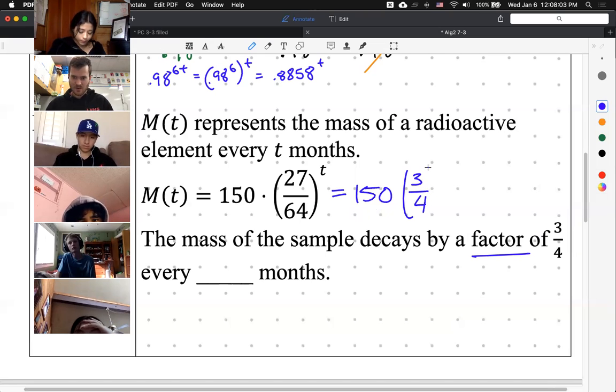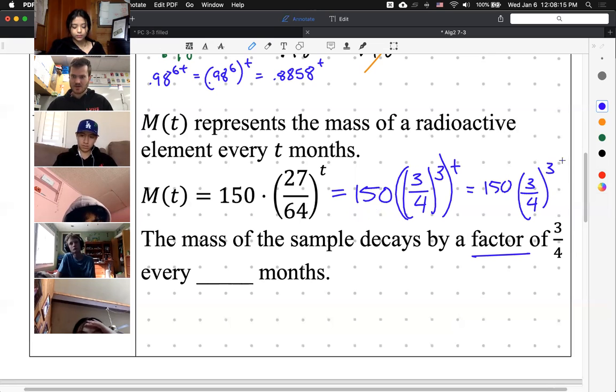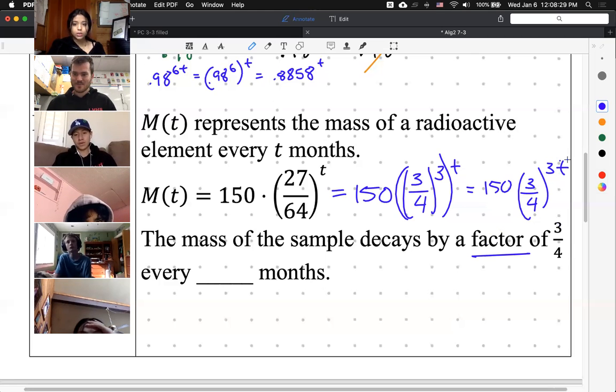It is to the power of 3. Yeah, so if I come down here and say this function is exactly equal to, I saw that 150 that I don't care about, 3 fourths, all of that to the power of 3 to the power of t. That's exactly the same thing. And then you can say, yep, that's 150, 3 fourths to the power of 3t. Perfect. So we've correctly now have the factor of 3 fourths. You can see, yep, 3 fourths.